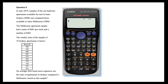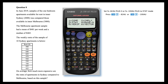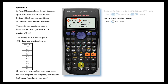Using a Casio FX 82 AU Plus 2 or Casio FX 100 AU Plus, a range of statistical calculations can be performed. To do so, first set your calculator to statistics or stat mode. This is done by pressing the mode key and then choosing 2 on an 82 AU, or mode and then 3 on a 100 AU. To perform a one variable analysis, select option 1.